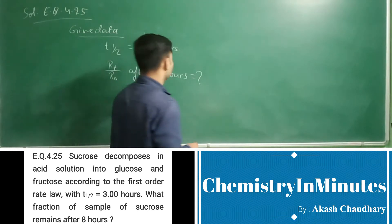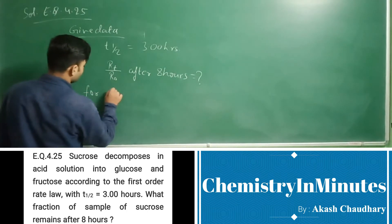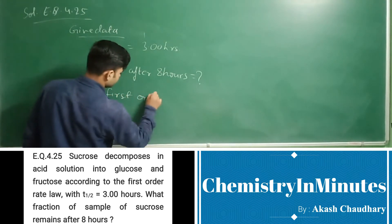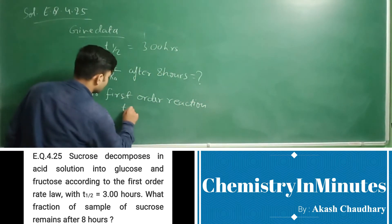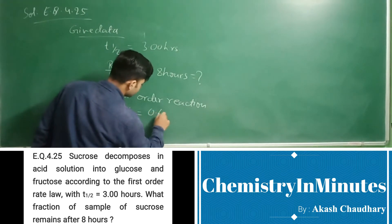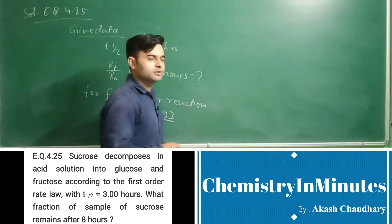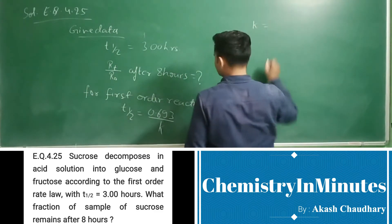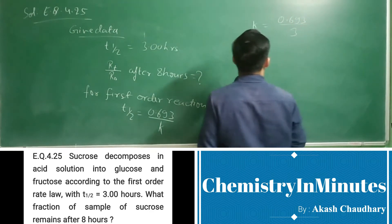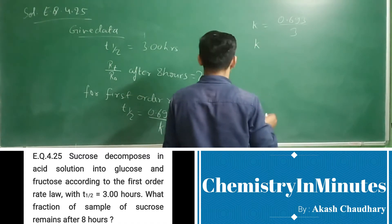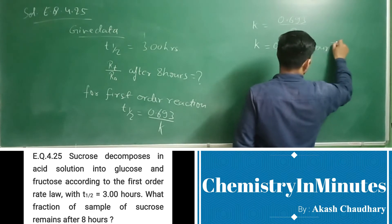Now for first order reaction, t-half equal to 0.693 upon k. From here we will find the rate constant for the reaction. Now k equal to 0.693 upon 3, and k will come as 0.231 per hour.